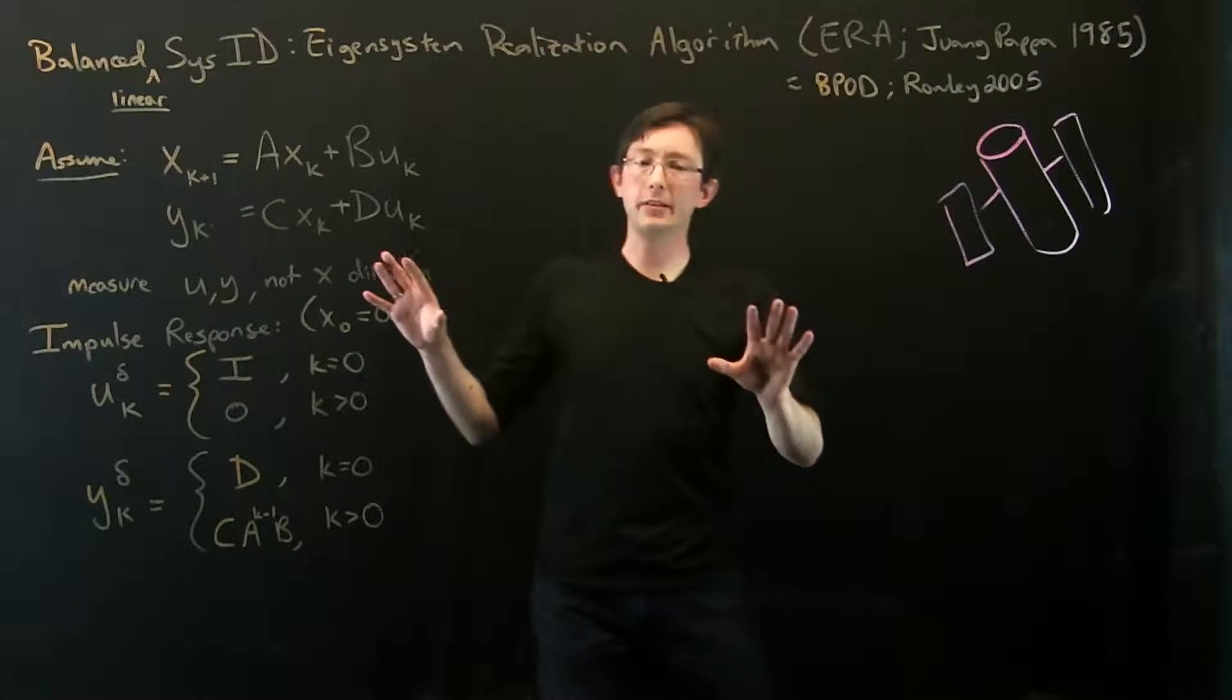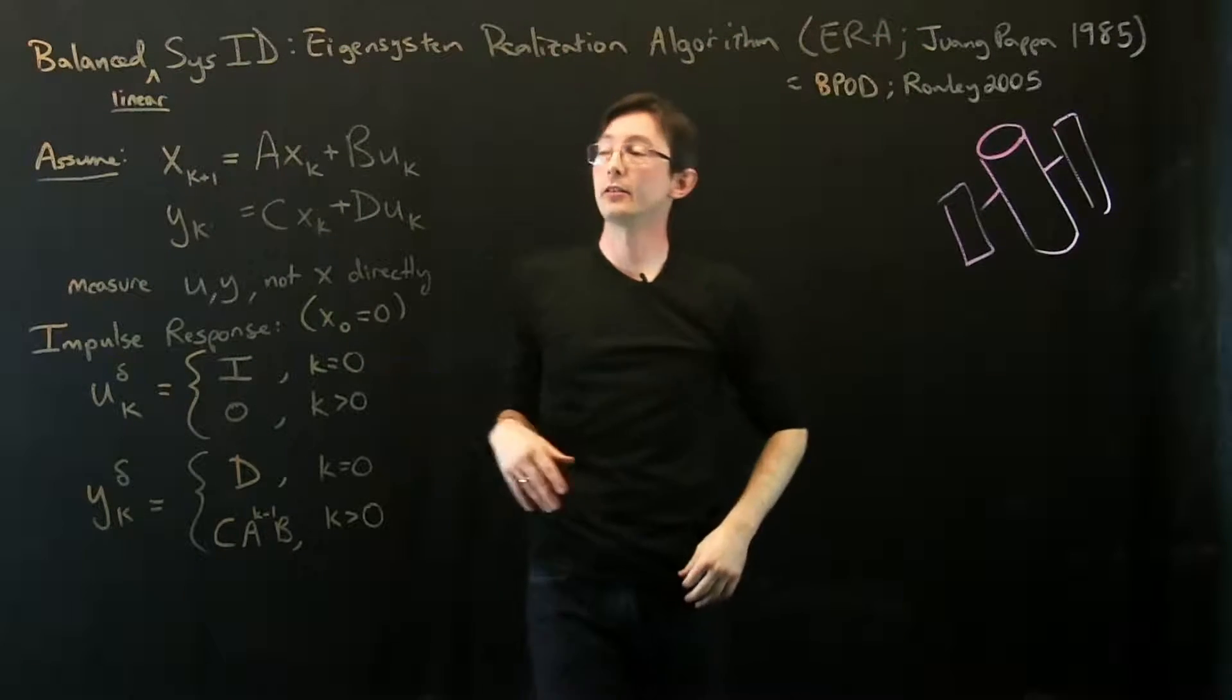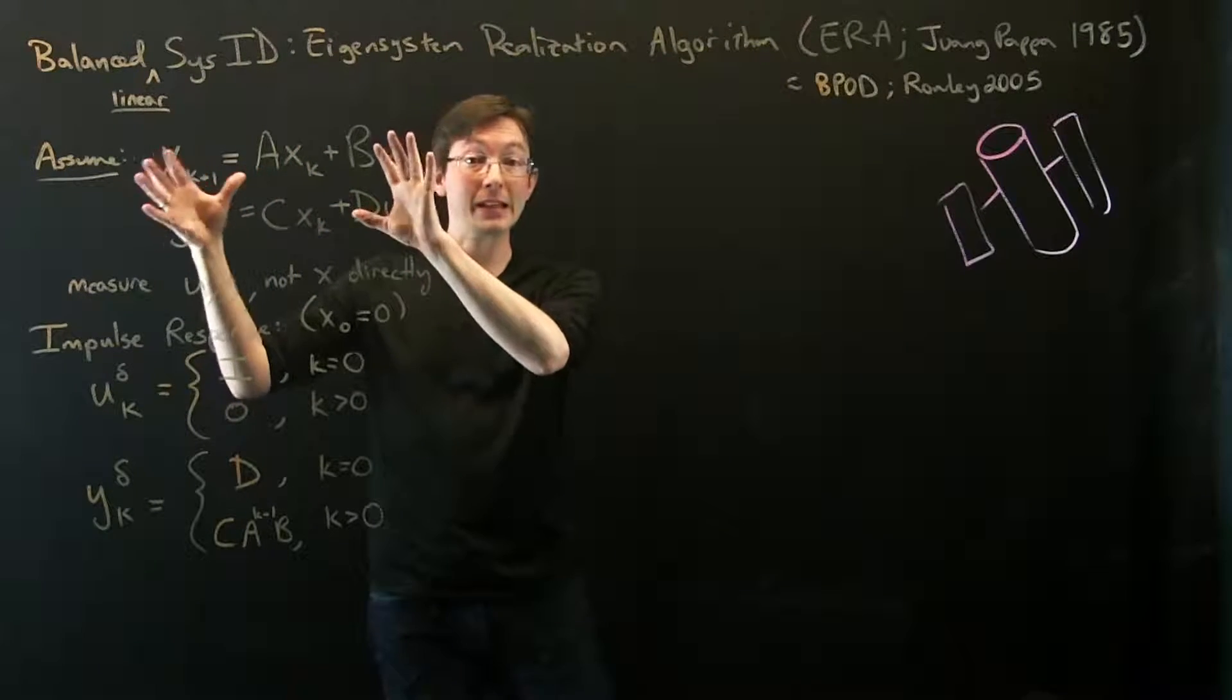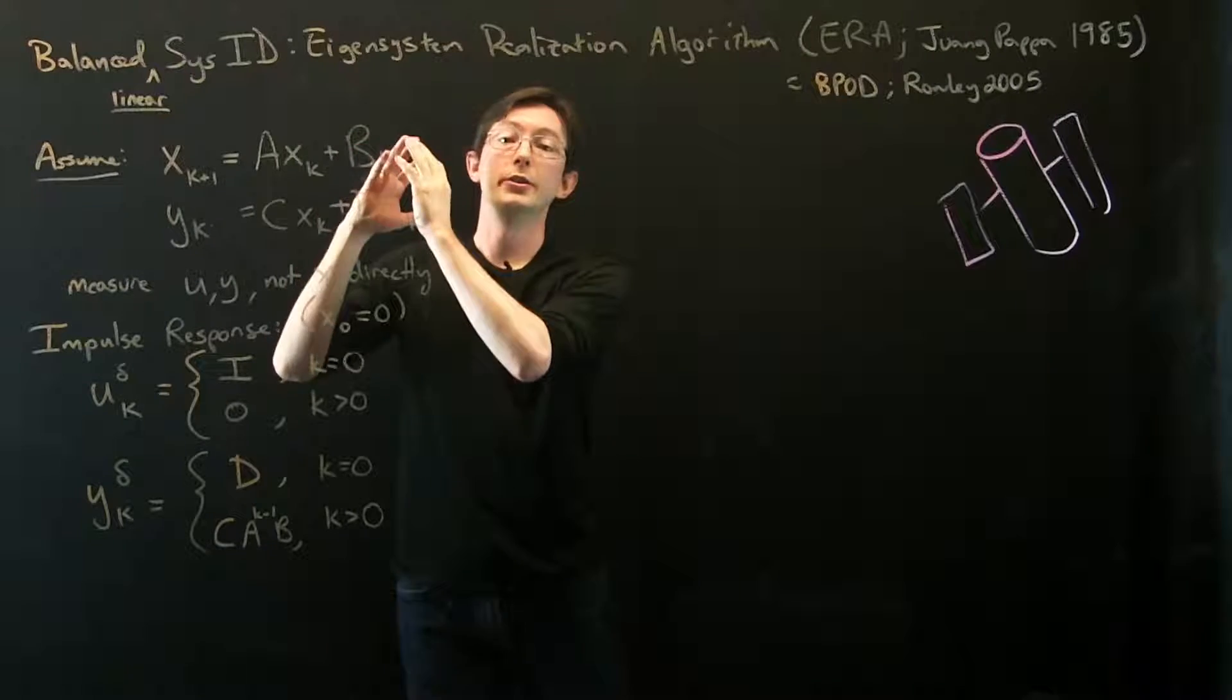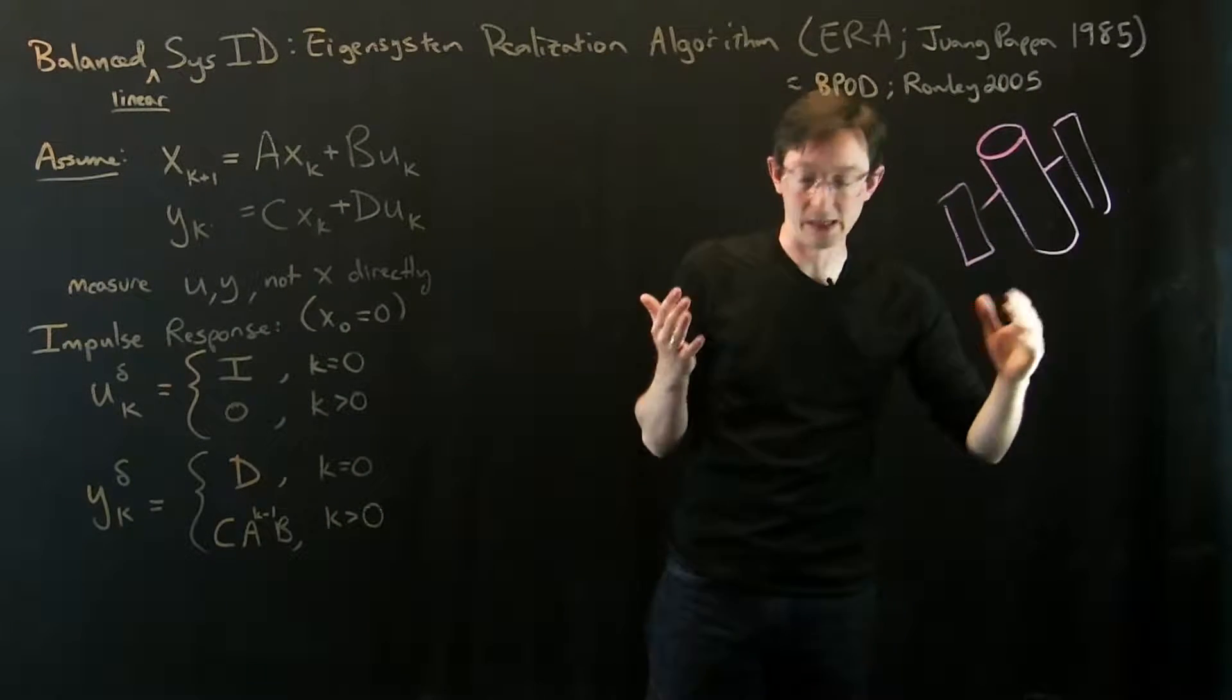Welcome back. In the last lecture, I gave an overview of what we're going to do with the eigensystem realization algorithm. We're going to fit a linear model, a best fit linear dynamical system of rank R to measured impulse response data for something like an aerospace system.